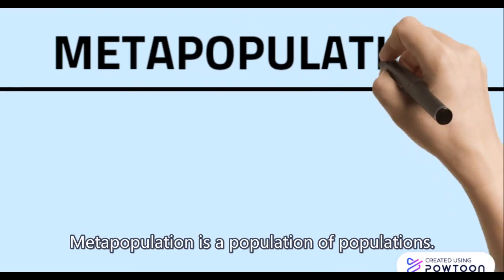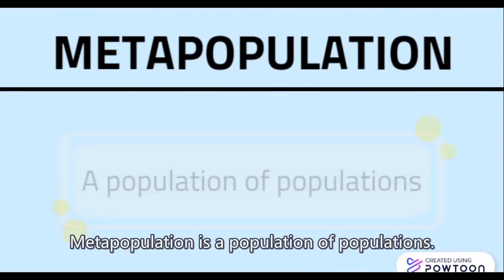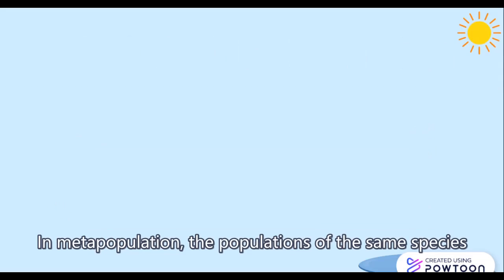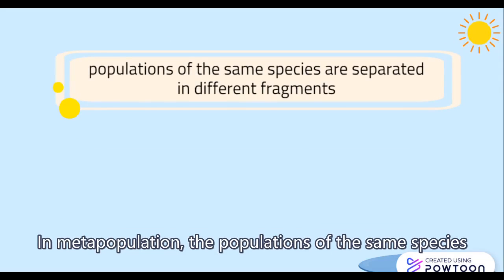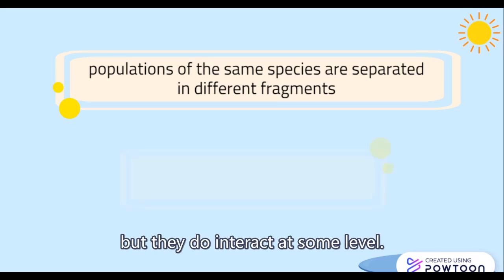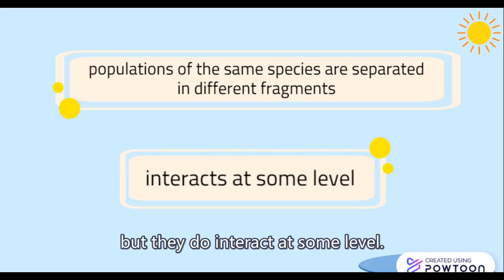Metapopulation is a population of populations. In metapopulation, the populations of the same species are separated in different fragments, but they do interact at some level.